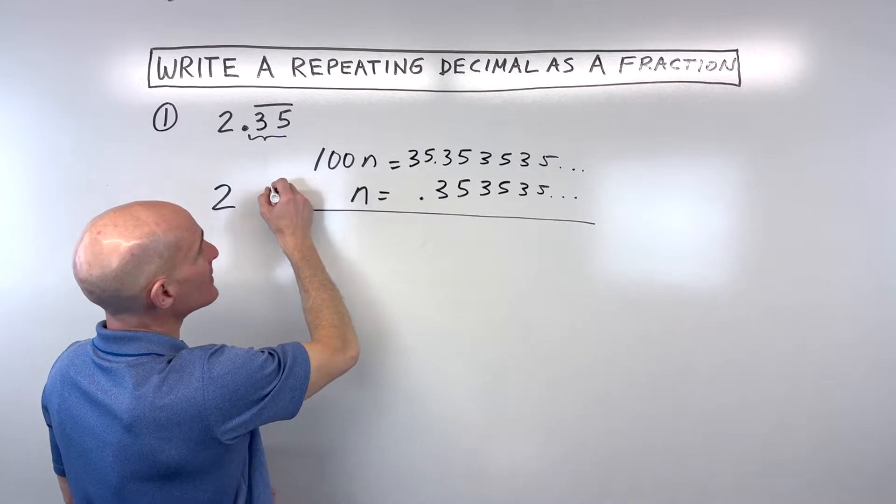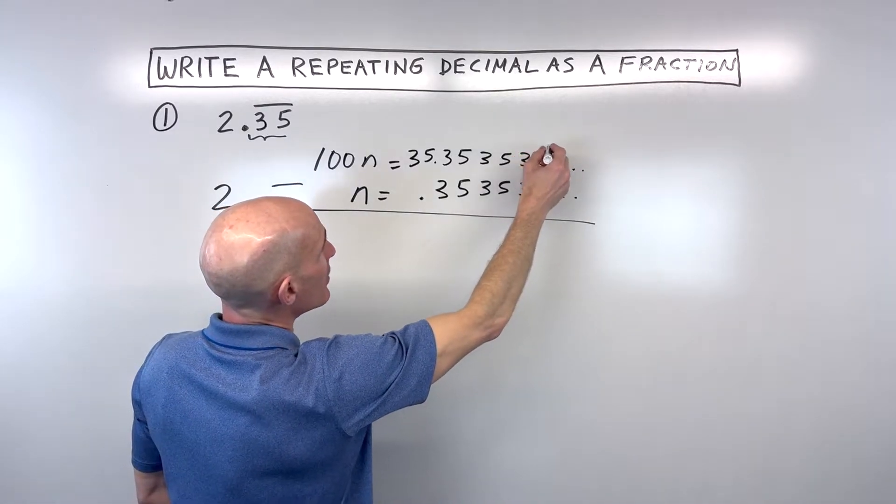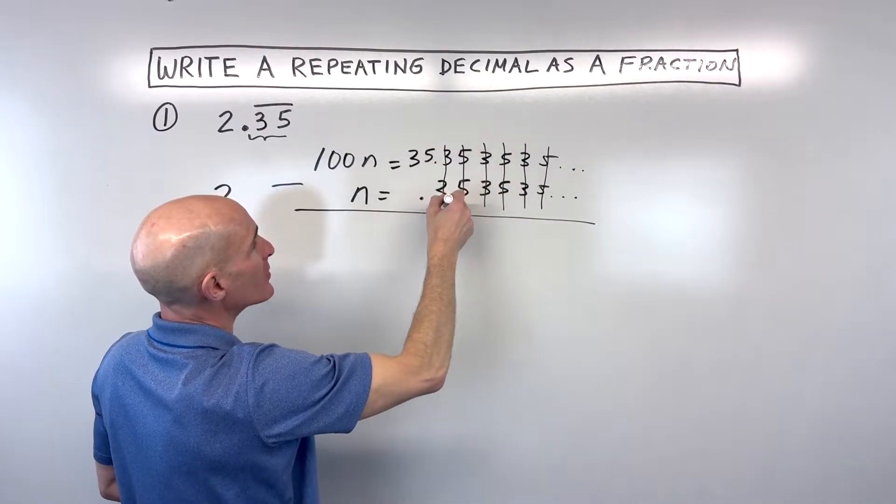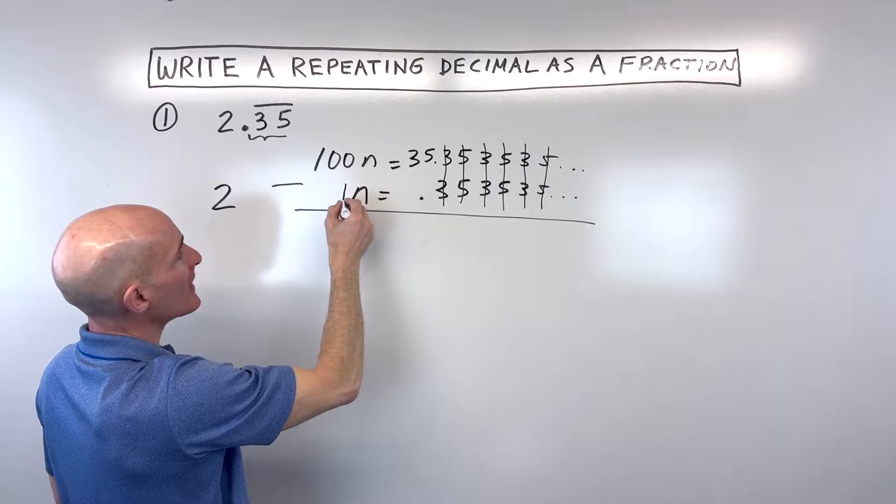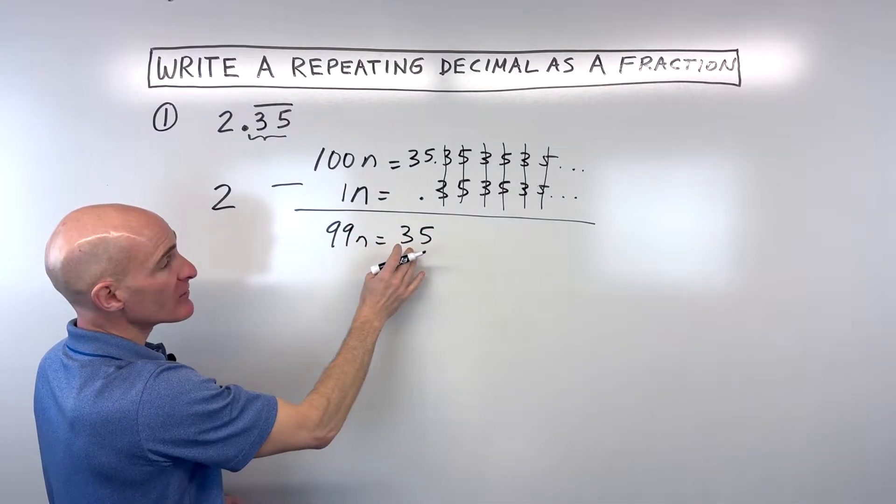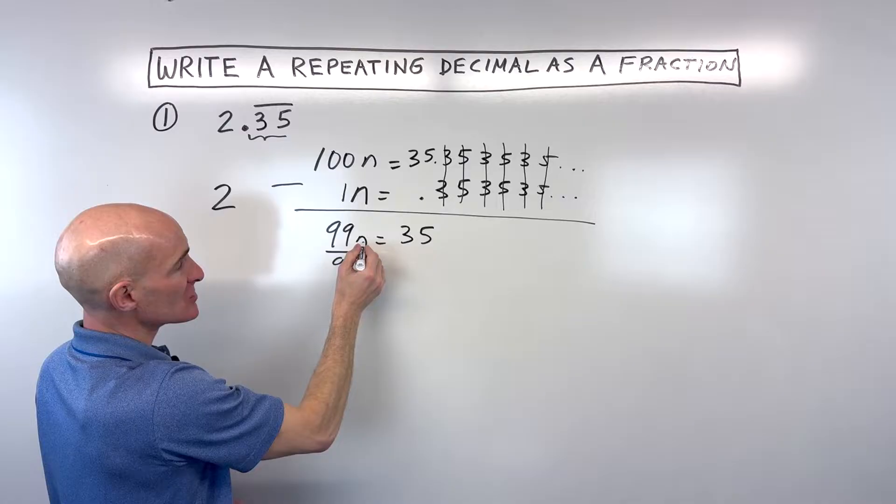So then what we're going to do is we're going to subtract so that this repeating part here is canceling out, all the way down. And so you can see we're just left with 100 minus 1n is 99n, and that equals 35.